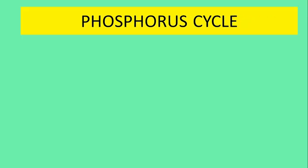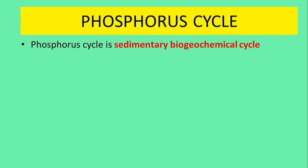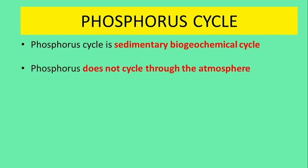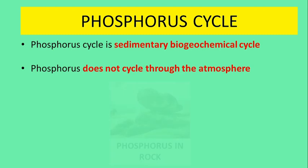Phosphorus, which is widely utilized by living organisms for their growth and development, is not available in the atmosphere. Therefore, this cycle is known as a sedimentary biogeochemical cycle. The reason is that phosphorus does not cycle through the atmosphere, so the main reservoir of phosphorus is available in the form of rock.